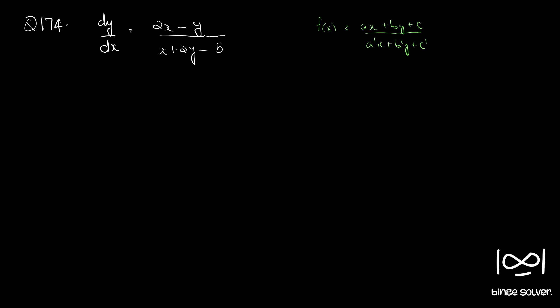We will first check whether the given equation is exact. Rearranging, we have (2x - 5)dx + (-x - 2y + 5)dy = 0.